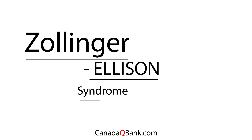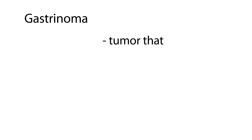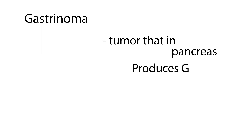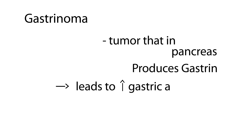Zollinger-Ellison syndrome, or ZE syndrome, is essentially a gastrinoma — a tumor that occurs in the pancreas and produces gastrin. Gastrin leads to the stimulation and increased production of gastric acid, which causes stomach ulcers or peptic ulcers.